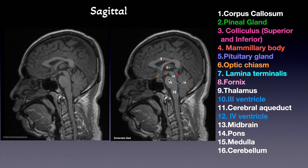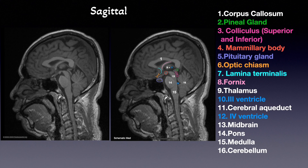Next, we can see here the mammillary body — the primary function of the mammillary body is recollective memory. Next, we can see the pituitary gland, which secretes and releases hormones. And here we can see the optic chiasm. Then we can see the blue structure, the lamina terminalis. This part is the hypothalamus and the fornix. And here is located the thalamus — this is the thalamus, and this part is the hypothalamus.